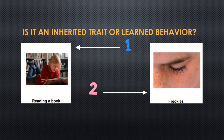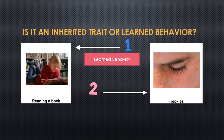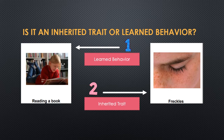Is it an inherited trait or learned behavior? Let's practice. What do you think: one, reading a book is? And two, freckles are? Number one, reading a book is a learned behavior. Your teacher taught most of you how to read a book, so reading is not something you naturally know how to do — you have to be taught. Freckles, on the other hand, are inherited. Maybe your mom has freckles and that's why you have freckles, or your grandma has freckles. That's something you could have in your genetics, your genes, that's passed down from parent to offspring.